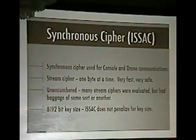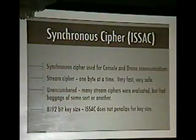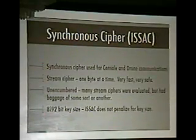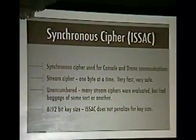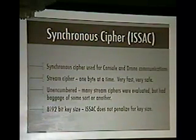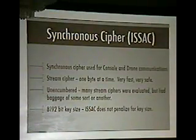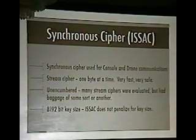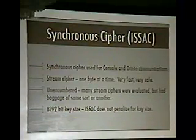ISAAC is a symmetric cipher used for console and drone communication — the actual communication itself. Once the symmetric keys are exchanged, the stream cipher operates one byte at a time. It's very fast and very safe. One of the nice things is we can use a large key — a 182-bit key — because ISAAC does not penalize you for increasing key size. We could use a 16K-bit key or a 32K-bit key and it would make no difference to computational performance.